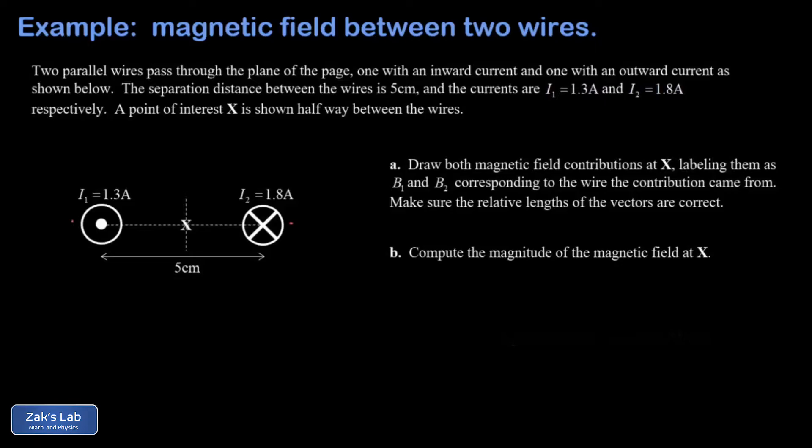The one on the left is a little bit weaker than the one on the right. It's 1.3 amps instead of 1.8. We've labeled a point of interest exactly halfway between these wires. That's at the 2.5-centimeter mark because the wires are separated by 5 centimeters.